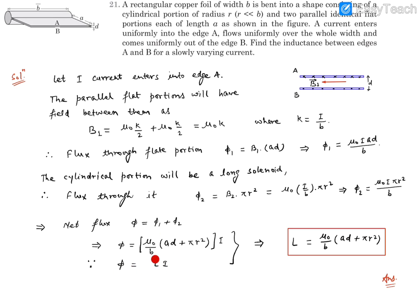This can be compared with φ equals LI for self-inductance. So L comes out to be μ₀/b times (ad + πr²). That's the inductance of the system between these two points A and B.